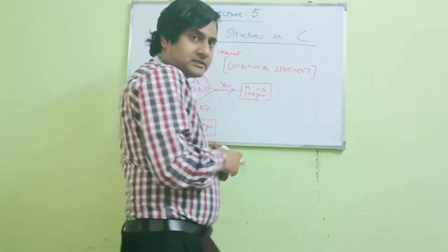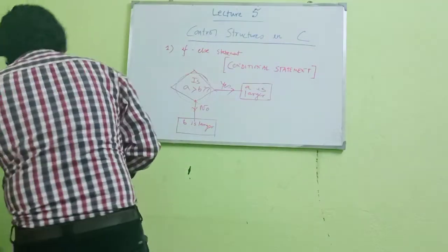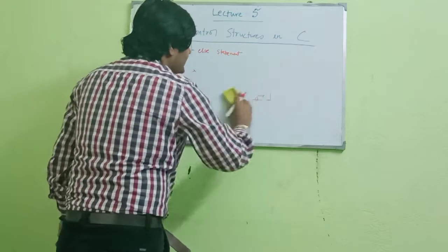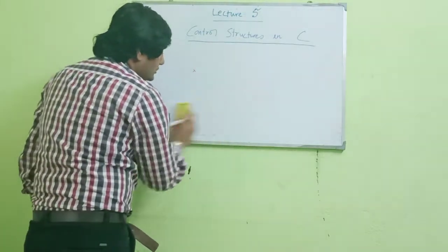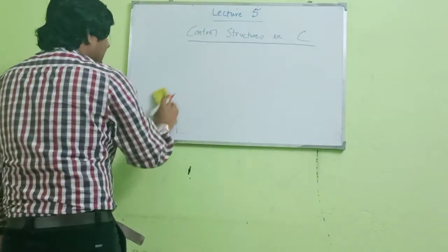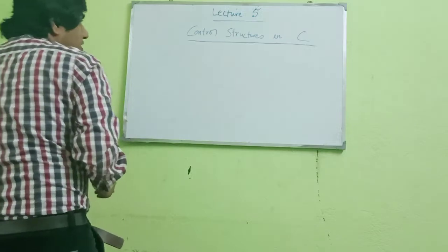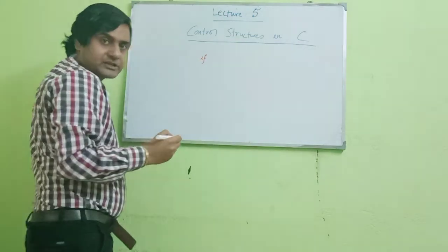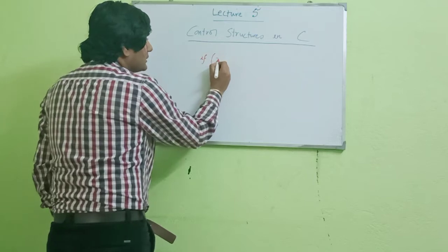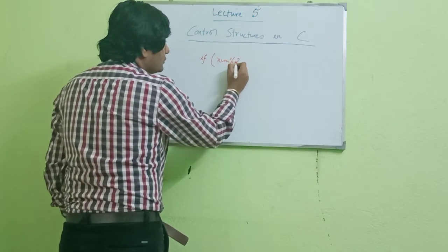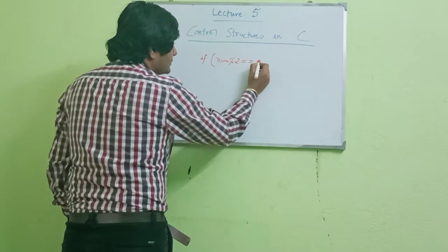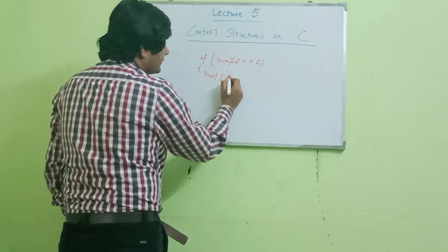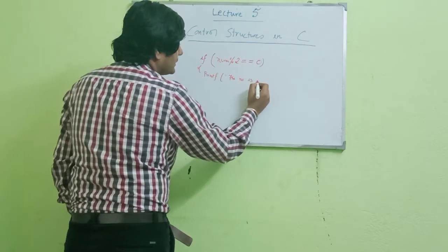This is how the if-else statement works. If I write a code to demonstrate, it will be very simple. Suppose I want to check whether a number is even or odd. Along with the associated code, the if-else section will be: if (number % 2 == 0) then print 'the number is even'.